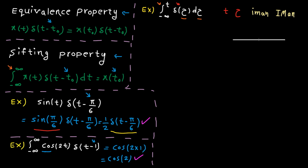Let's plot the delta function: the function is 0 everywhere except at the origin. The integral is from minus infinity to t, and we don't know what t is, so let's consider two scenarios. When t is less than 0, the integral is from minus infinity to somewhere before 0. Since we don't reach 0, in this interval we have just a bunch of zeros — the integral basically means summation, so the summation of lots of zeros is still 0.